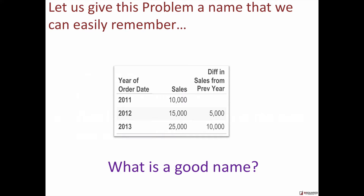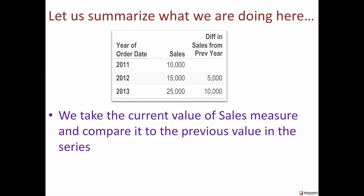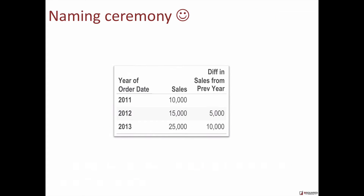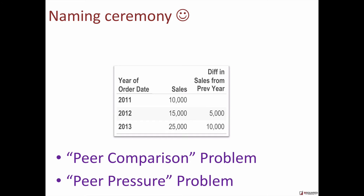Let's come back and give this problem a name so we can easily remember it. Let's summarize what we are doing: we take the current value of the sales measure and compare it to the previous value. In other words, we are doing a 'me versus my peer' comparison. So what's a good name? Peer comparison sounds like a fair, formal name. But since we are in the visualization world, I'd like a name that evokes images and concrete things in our mind. What could be better than: the peer pressure problem?